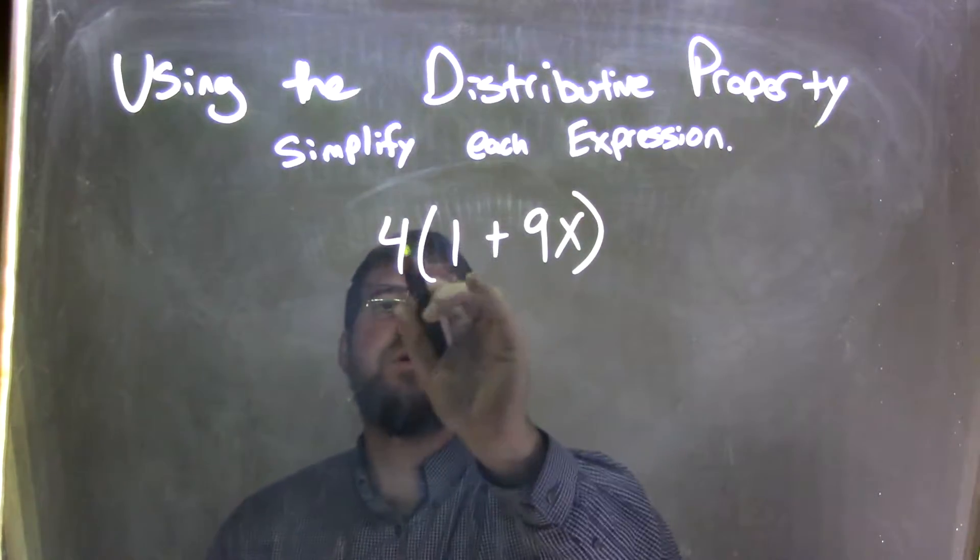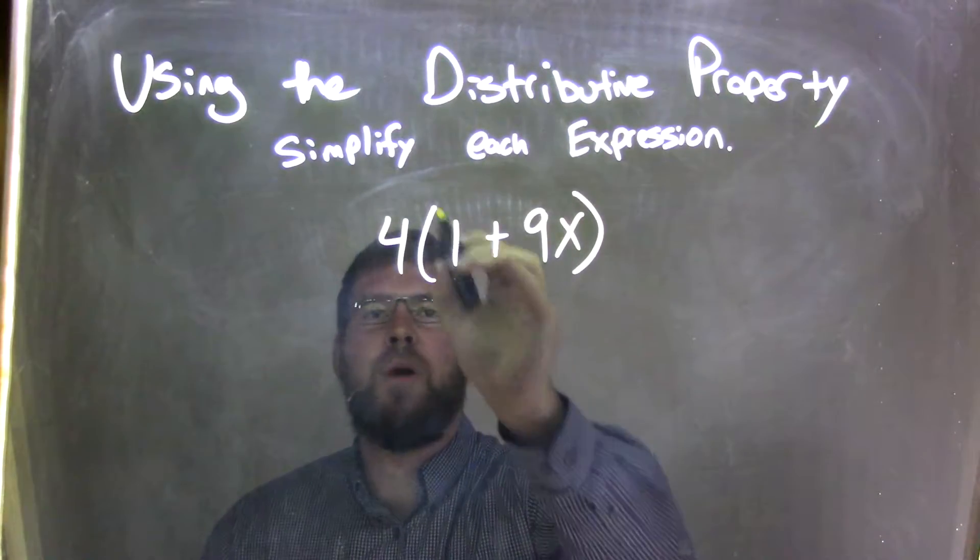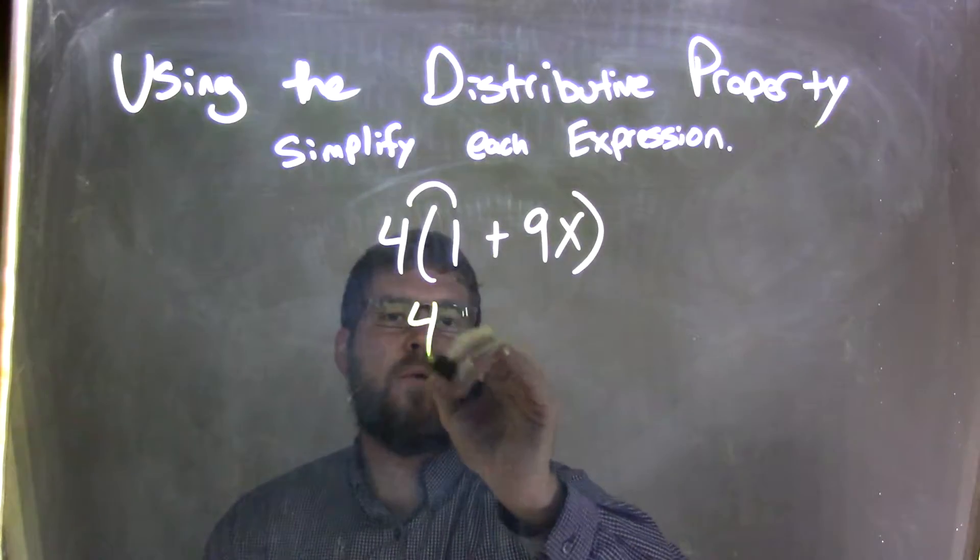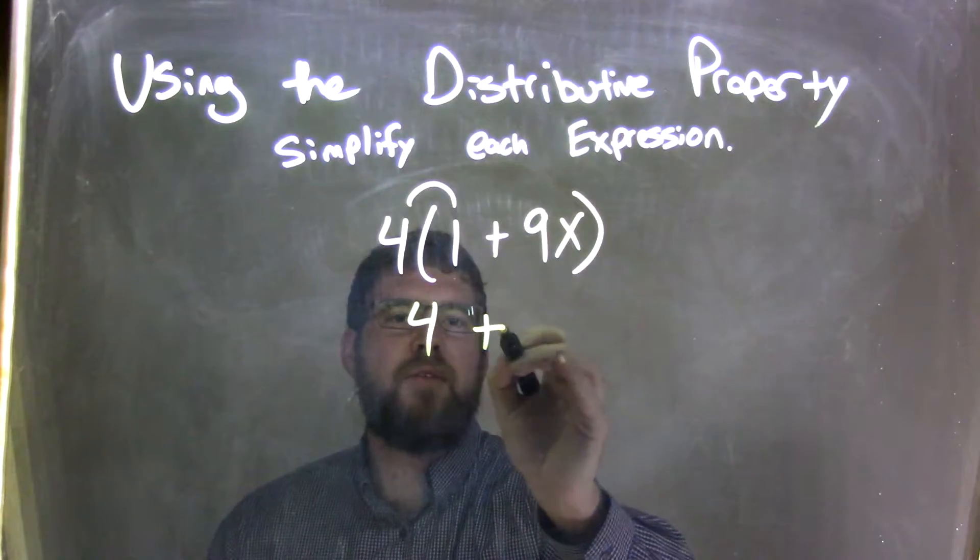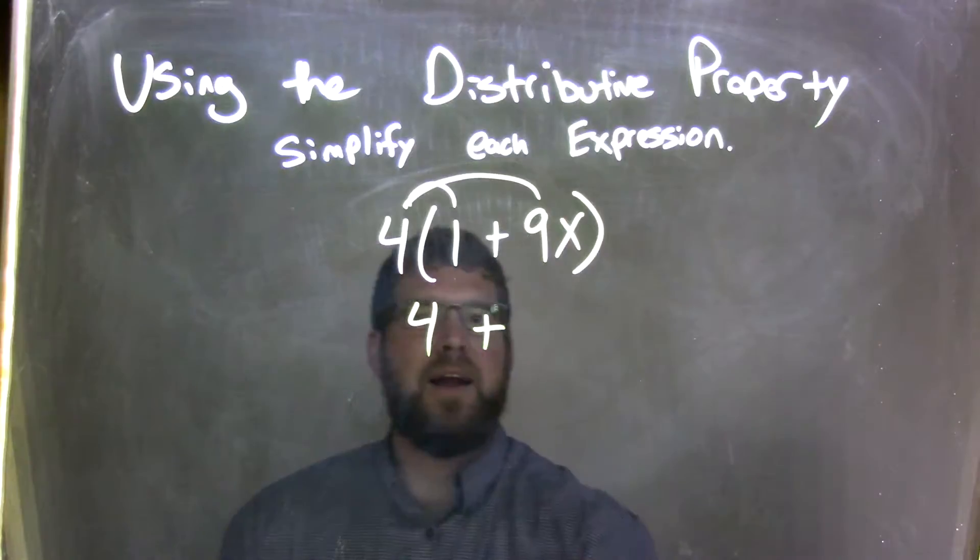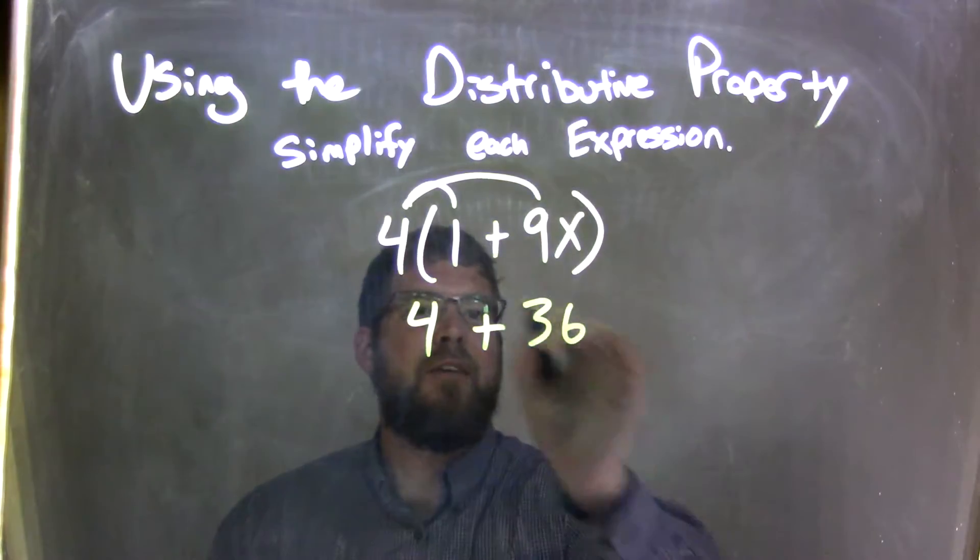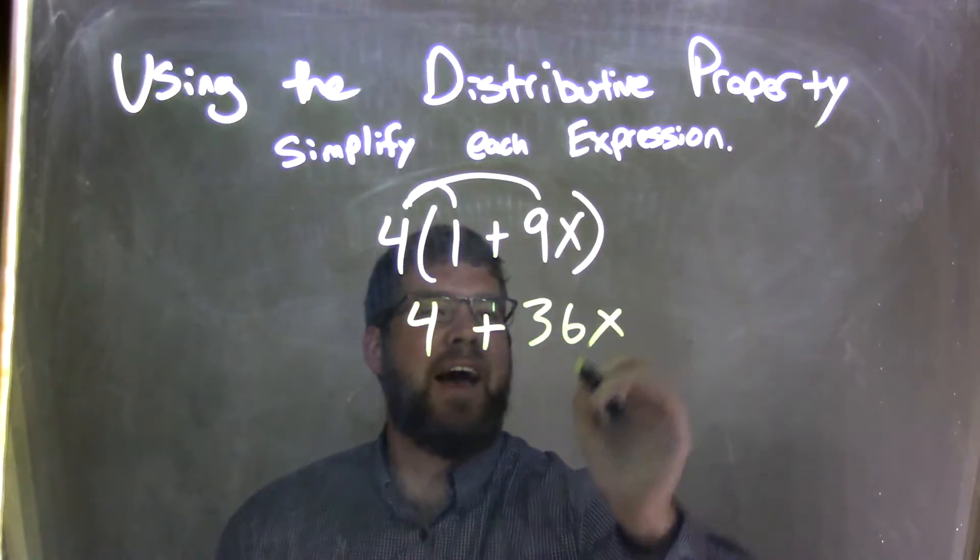4 times 1 first. Well, 4 times 1 is just 4. The parentheses separates the two. Now we have 4 times 9x. 4 times 9 is 36, and 4 times 9x is 36x.